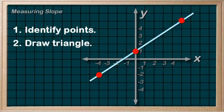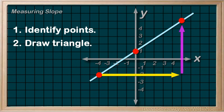Second, once we have our points marked, we can draw in our triangle. An arrow to the right, to show our run. And an arrow going either up or down, showing the rise from the first point to the second point.